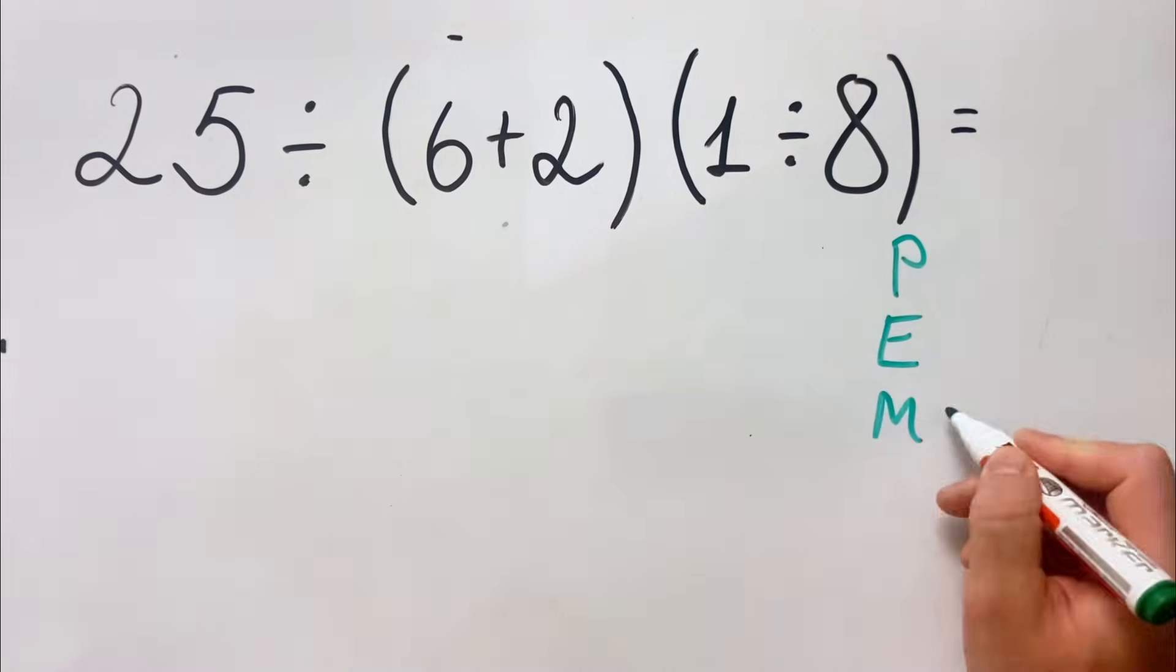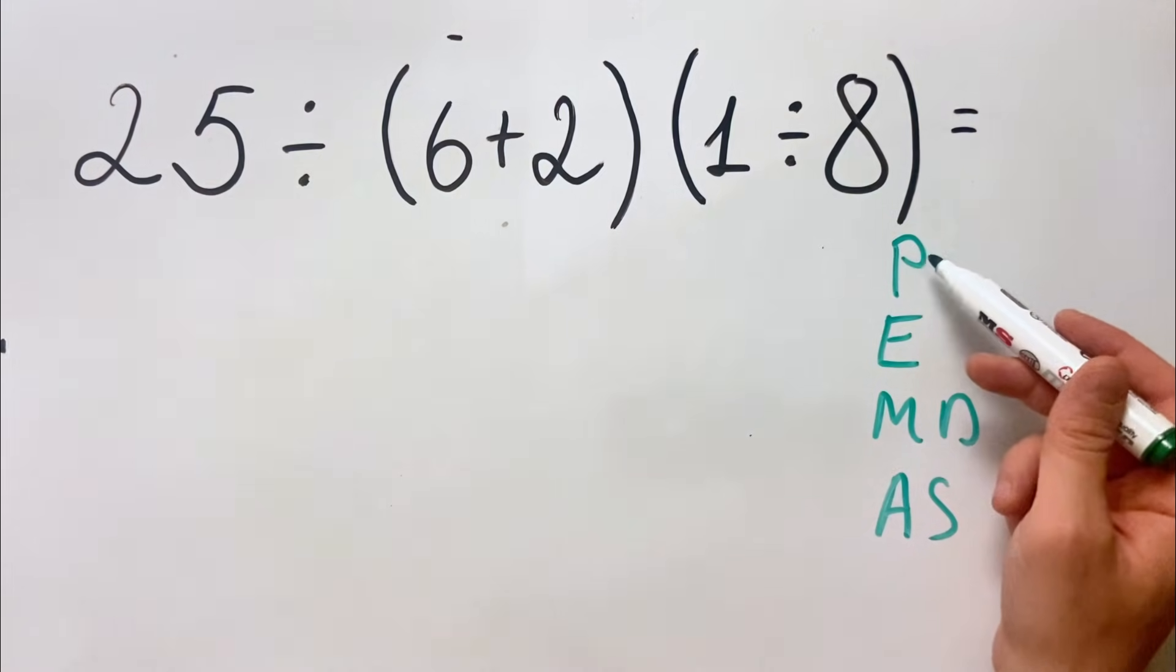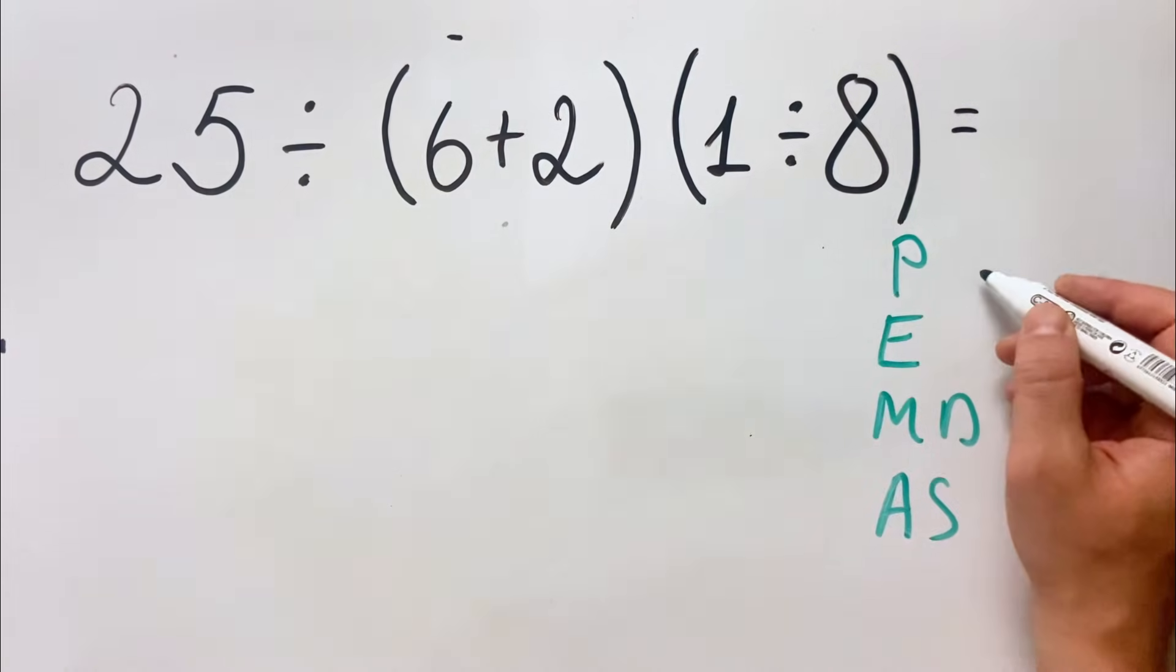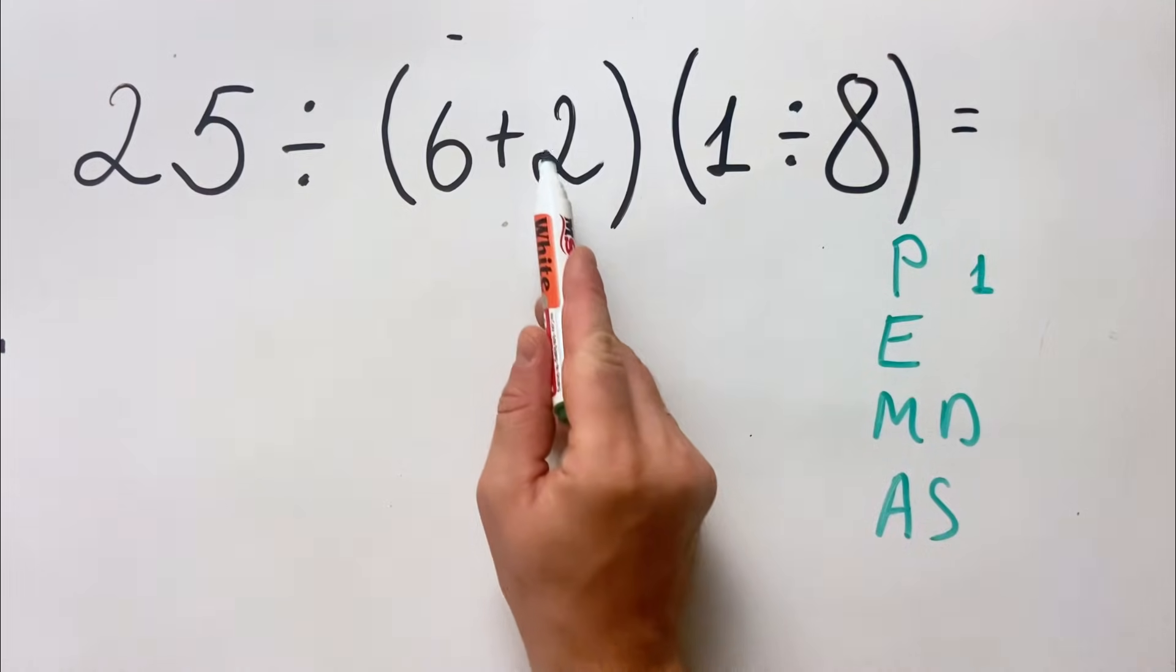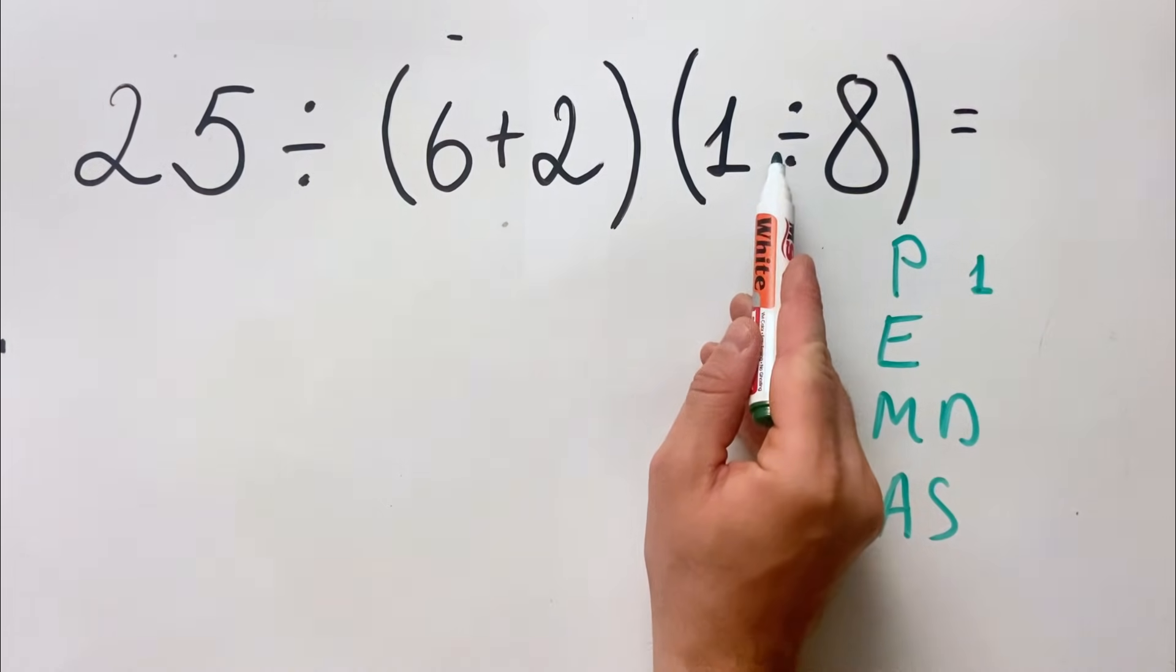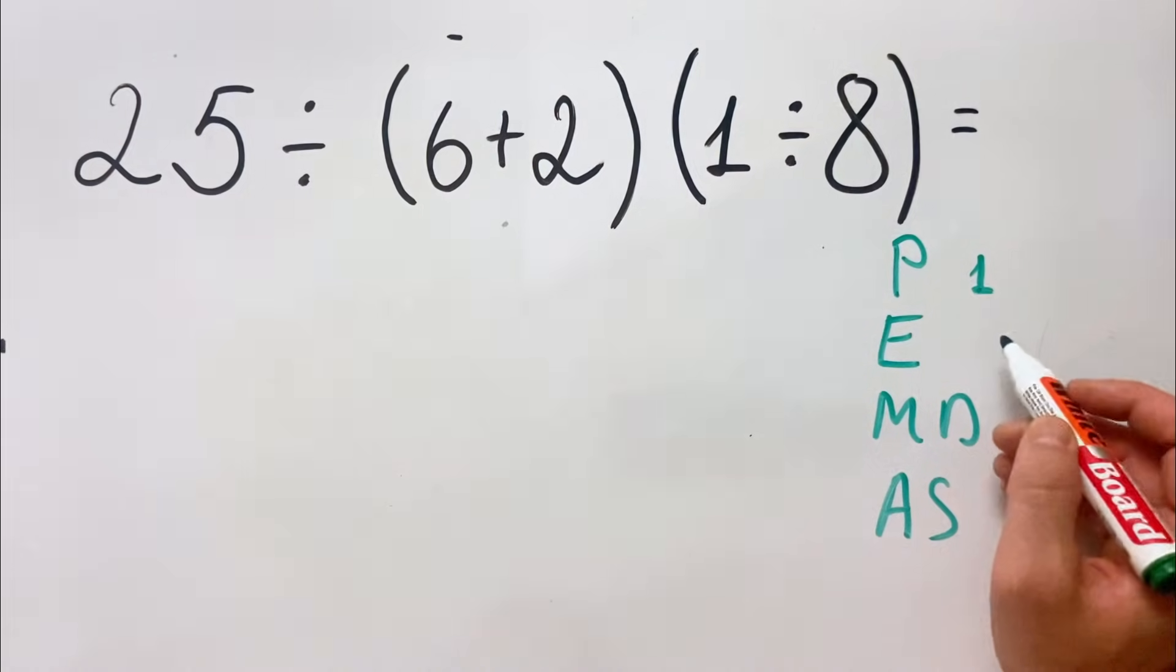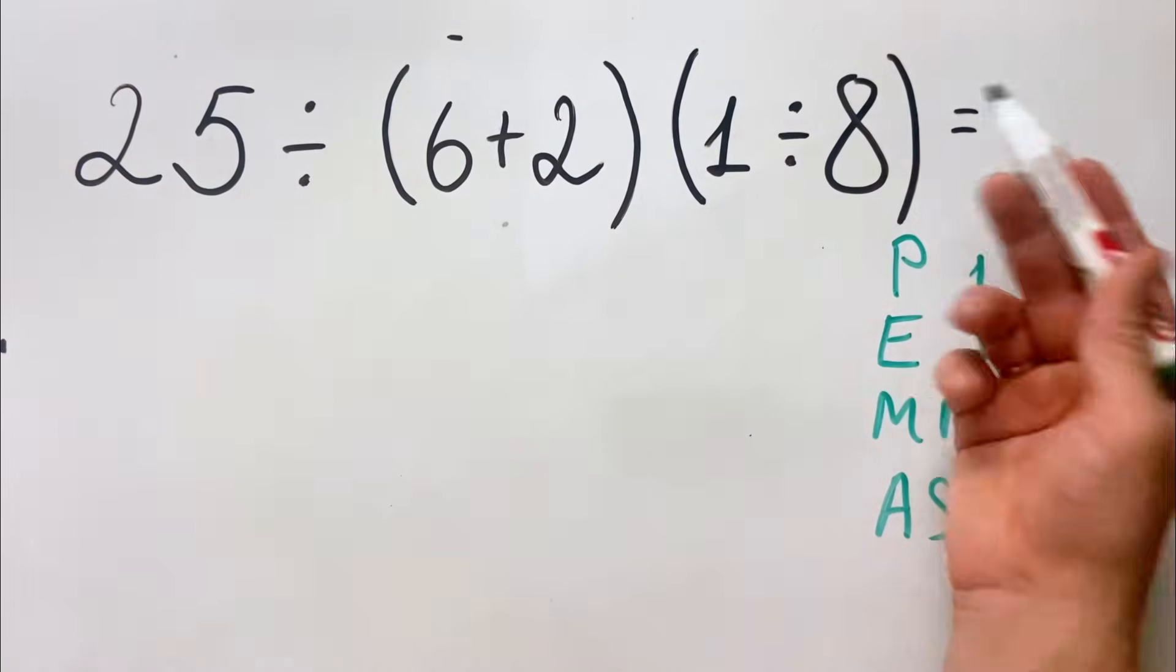We have P where P stands for parentheses. Here we have two parentheses and we always must do it in the first place, so in this case we'll do first what's inside the parentheses: 6 plus 2, and then 1 divided by 8. Then we have exponents; here we don't have it.